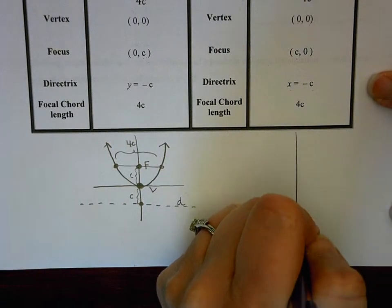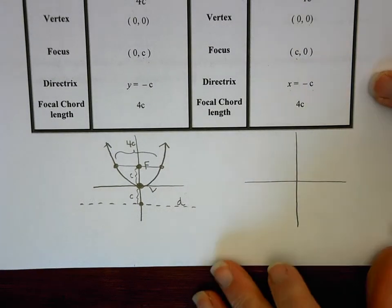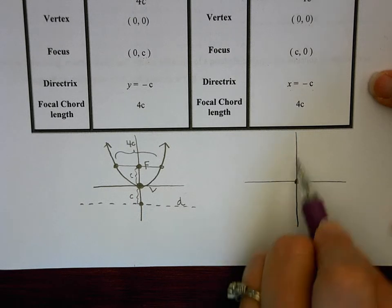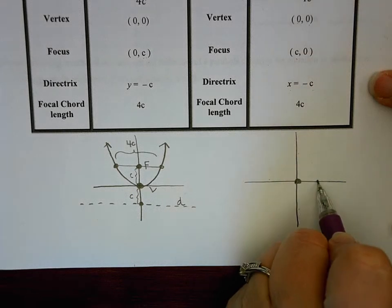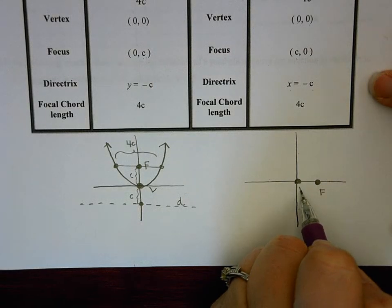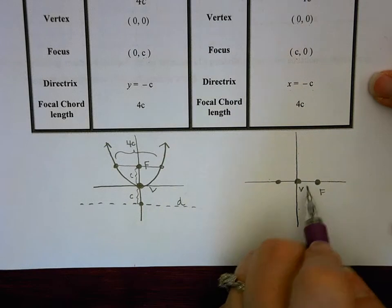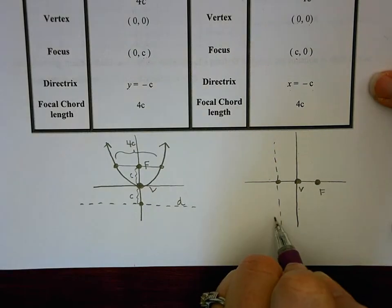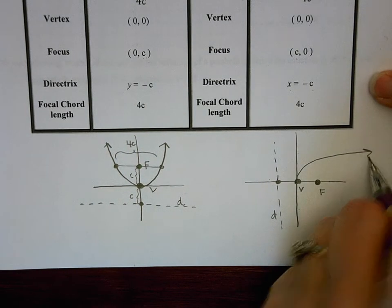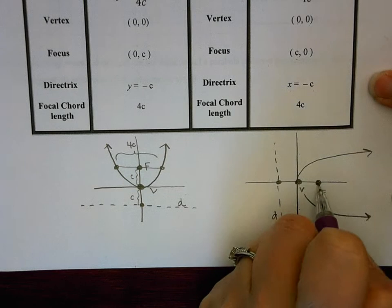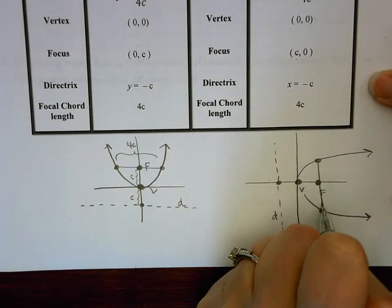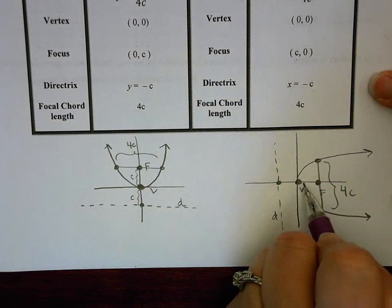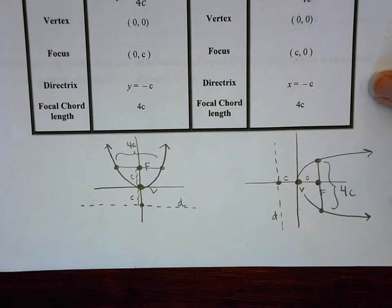For a horizontal parabola, the vertex is still at (0,0), but instead of going up and down to find the focus and directrix, we go left and right. If positive, go right to find the focus and left the same distance for the directrix. The parabola opens to the right if positive, to the left if negative. The focal chord endpoints are up 2c and down 2c from the focus, giving a total distance of 4c.